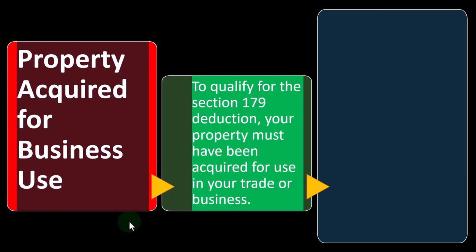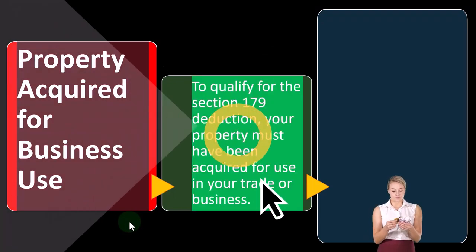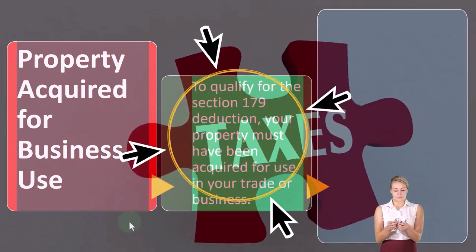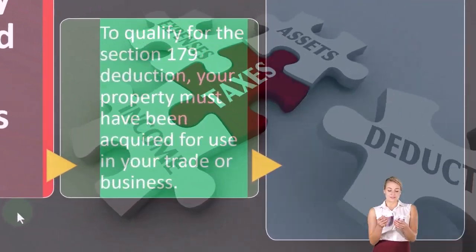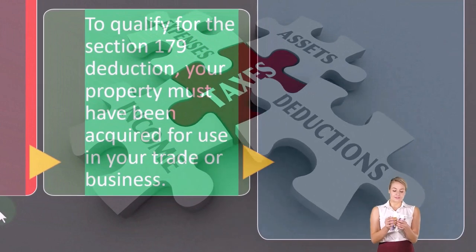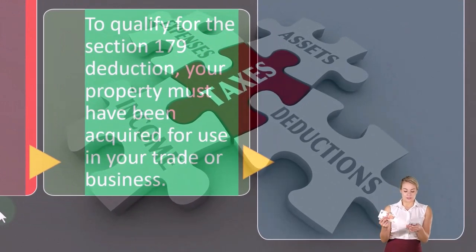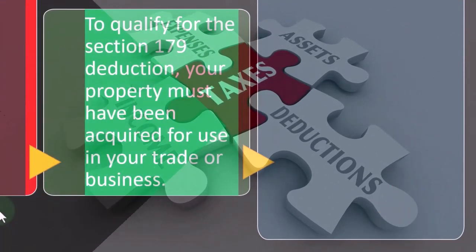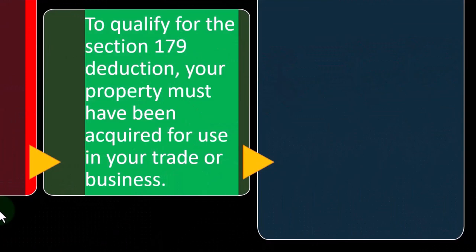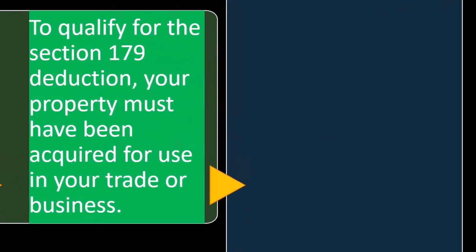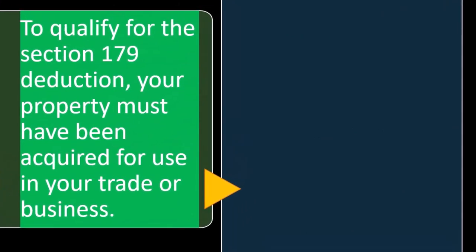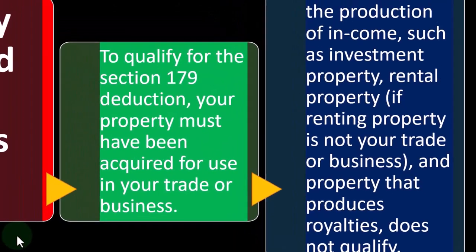To qualify for the Section 179 deduction, your property must have been acquired for use in your trade or business. That's the general rule for business-related deductions, which is generally what we're thinking of. The natural thought process in an income tax system is: what kinds of things should we be able to deduct? Those things we had to consume in order to generate revenue.